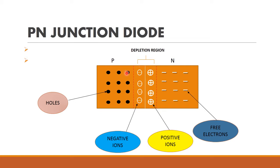When we join these two semiconductors, the holes move from P-type semiconductor to N-type semiconductor. Similarly, the electrons move from N-type to P-type. These electrons will combine with holes, and these holes will combine with the electrons. At the junction, positive ions and negative ions are created. These are immobile charge carriers.